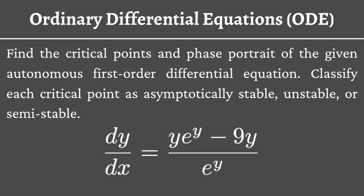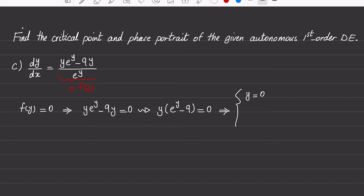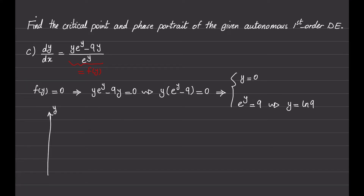Here we're going to find the critical points and phase portrait of the given autonomous first order differential equation, and also classify each critical point as stable or attractor, unstable or repeller, and semi-stable. We call the right hand side of this differential equation f(y) and we need to find the roots of f(y), which will be the critical points. We find two critical points: y equals zero and y equals ln(9), and these two critical points divide the y-axis into three different regions.